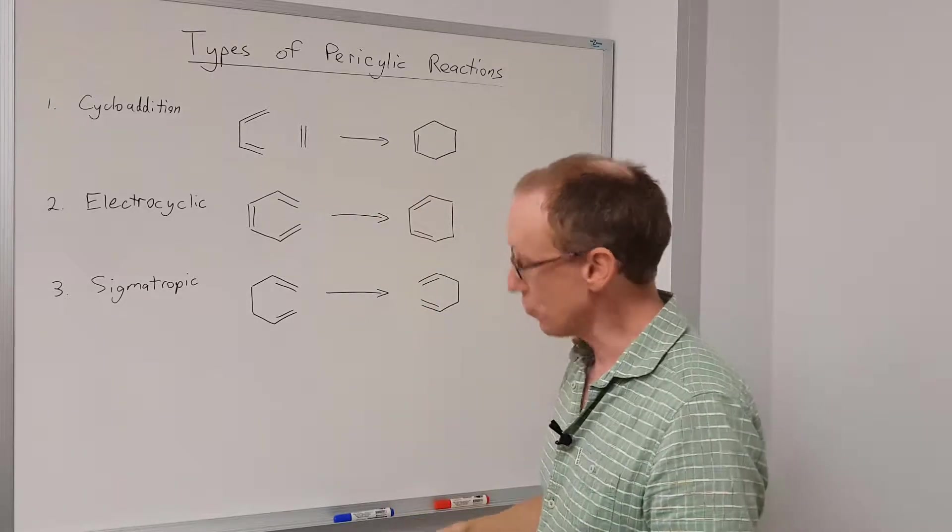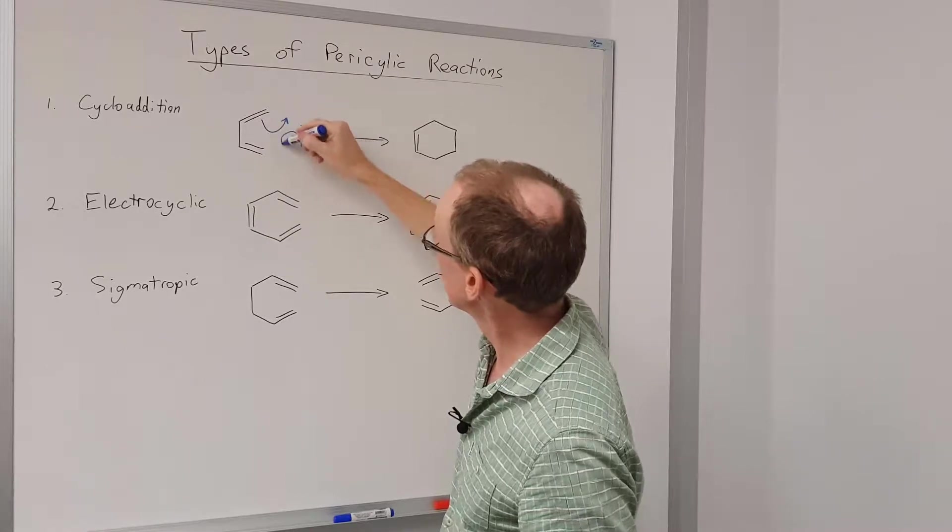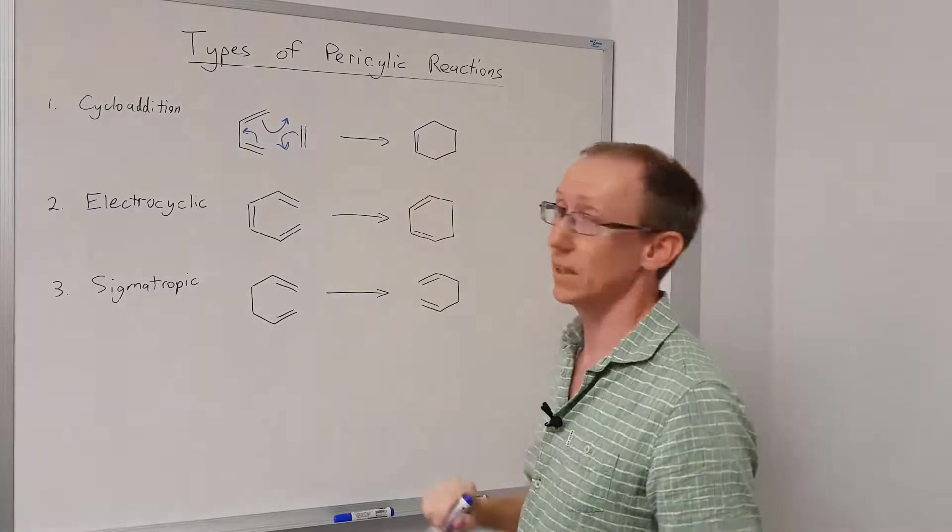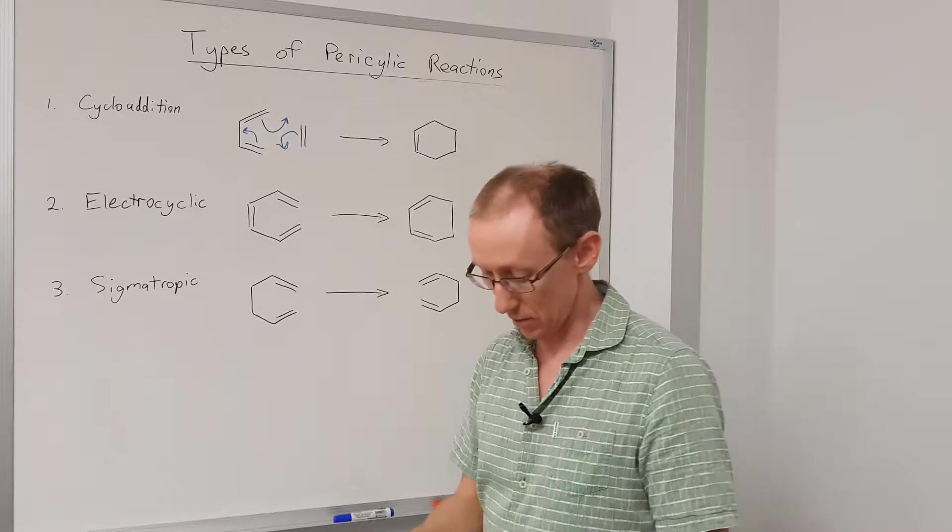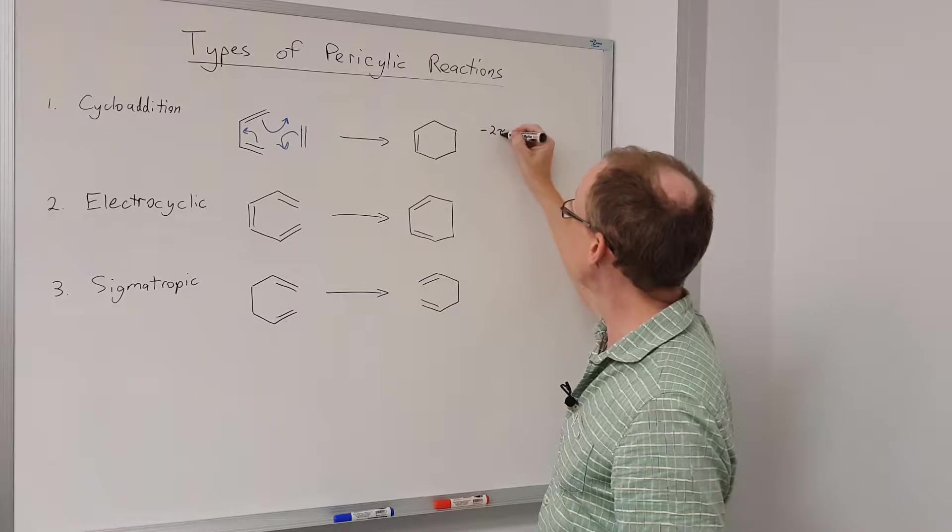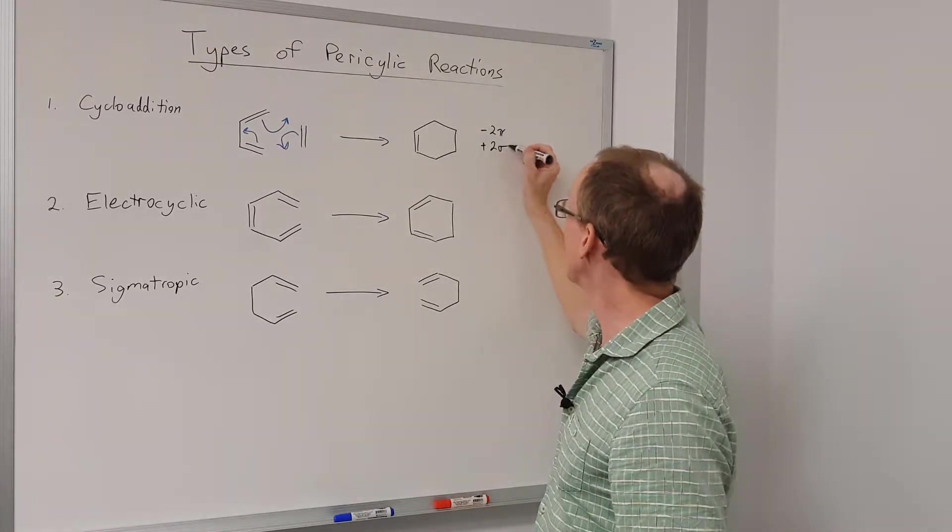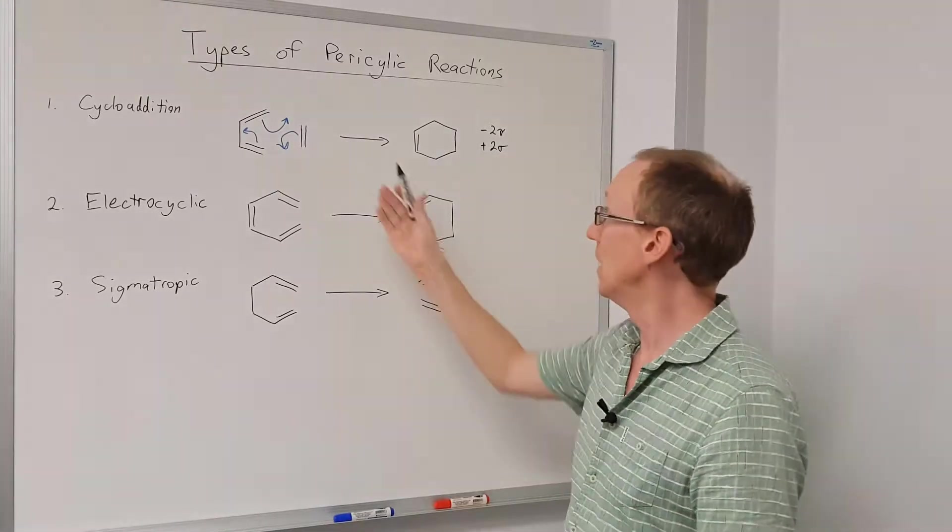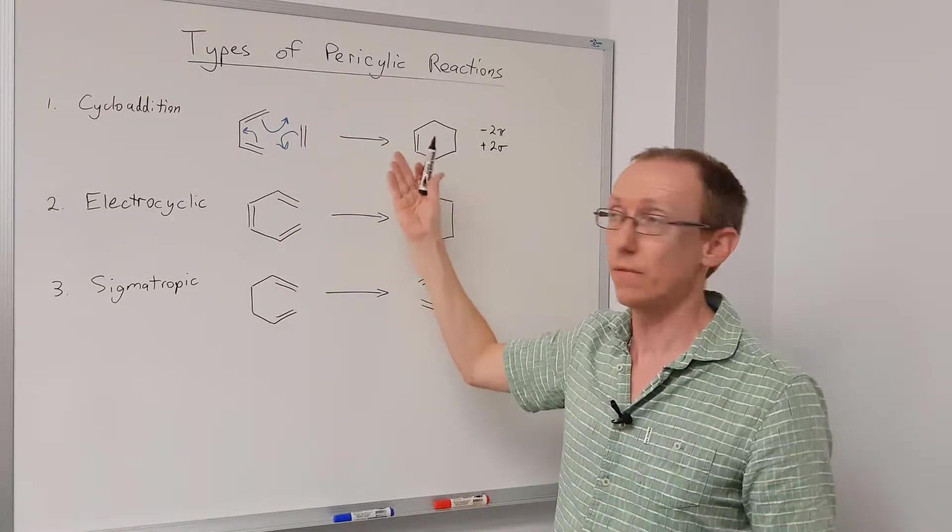So in that particular reaction, we can draw curly arrows to show the mechanism. We're going to have the arrows going in either direction, doesn't matter, but I need to go around in a circle to make the final product. And the important thing to note about this cycloaddition is that we lose two pi bonds but we gain two sigma bonds. And we know that in general, sigma bonds are more stable than pi bonds, and so that would seem to suggest that enthalpically, the Diels-Alder reaction should be favorable.